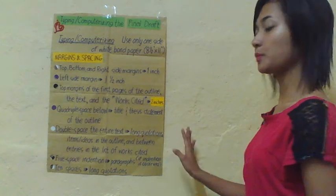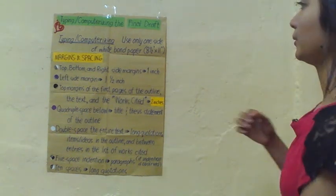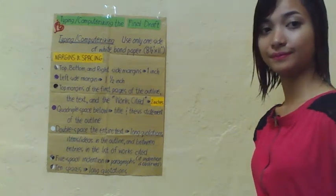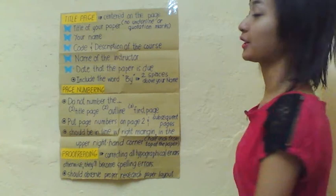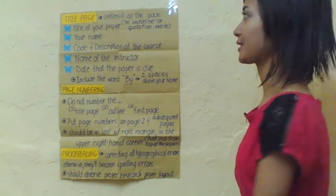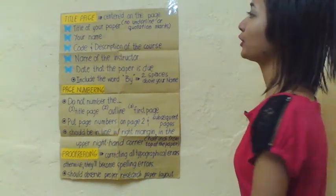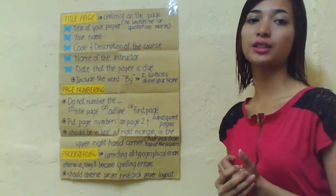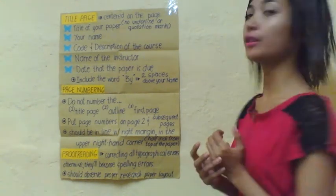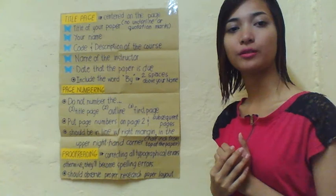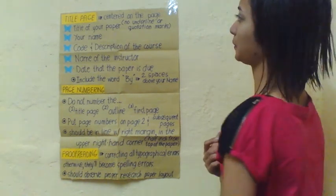Another rule is ten spaces for long quotations. The next topics are the title page, the page numbering, and proofreading. For the title page, there are certain details we have to include. The front page of the research paper or thesis is the title page, and this is centered on the page.